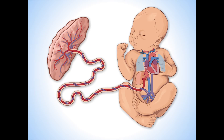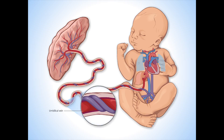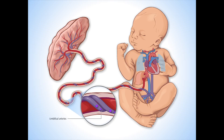Fetal Circulation: The oxygen pathway from the environment to the fetus is a central concept in fetal monitoring. Before birth, the umbilical vein carries oxygenated and nutrient-rich blood to the fetal heart, while the umbilical arteries circulate carbon dioxide and waste products back to the placenta.